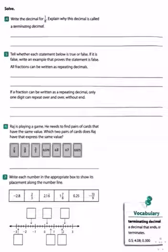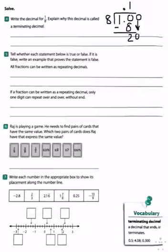Number 4. Write the decimal for 1 eighth. Explain why this decimal is called a terminating decimal. So, 8 can't go into 1, so we add a decimal and a 0. 8 can go into 10 one time. Subtract and you get 2. We're going to add another 0 and bring it down. 8 can go into 20 twice, we get 16. Subtract and you get 4. Add another 0 and bring it down. 8 can go into 40 five times.